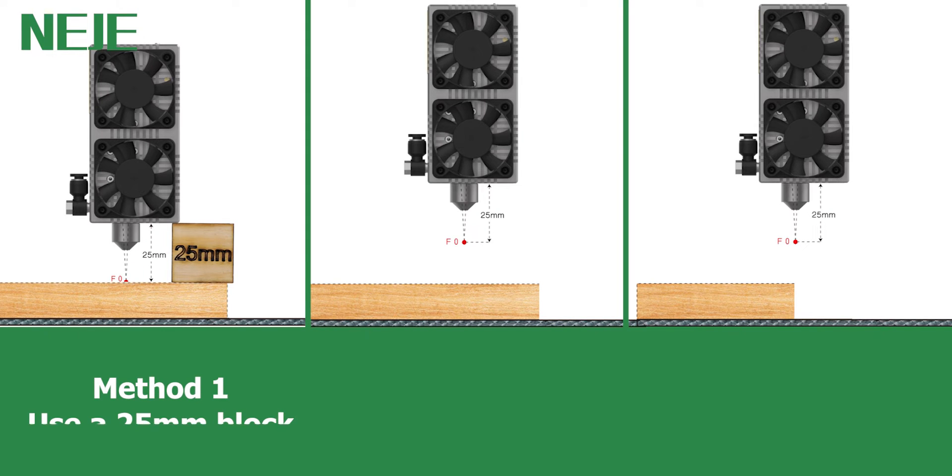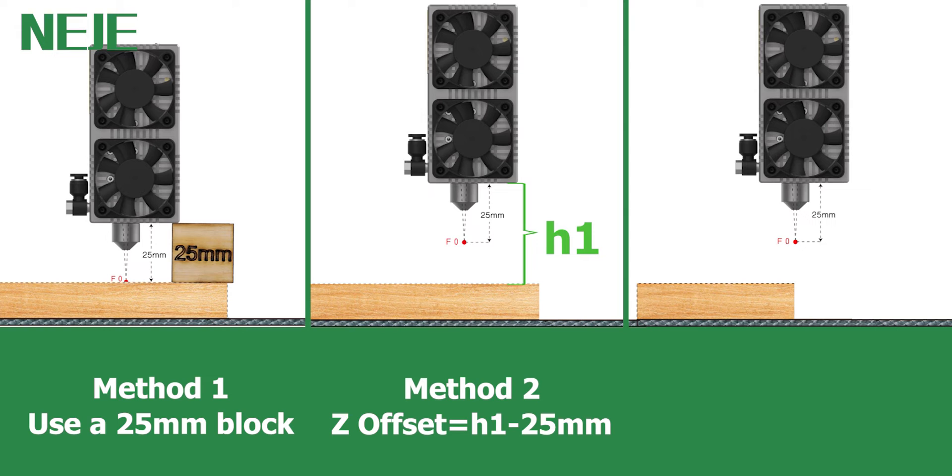Method 1: use a 25 millimeter block. It's suggested for beginners because it actually doesn't use the motorized Z-axis. Method 2 is the most frequently used method. Measure the distance from the edge of the module to the surface of the material, and then minus 25 millimeters. This will be your Z-offset parameter.